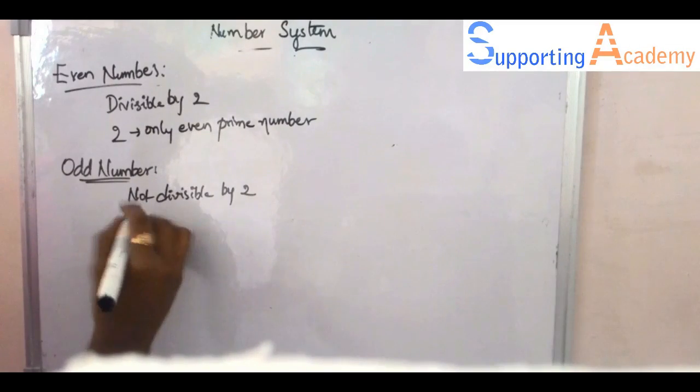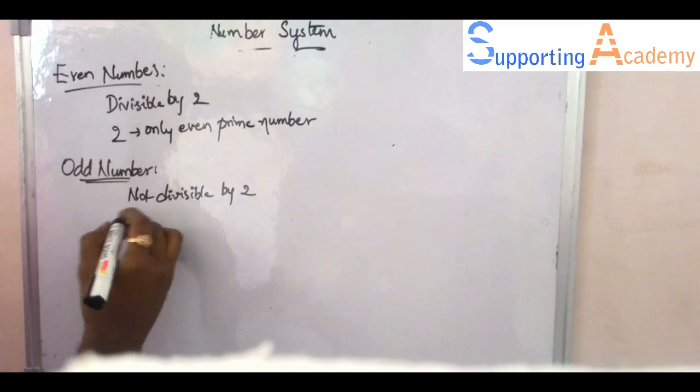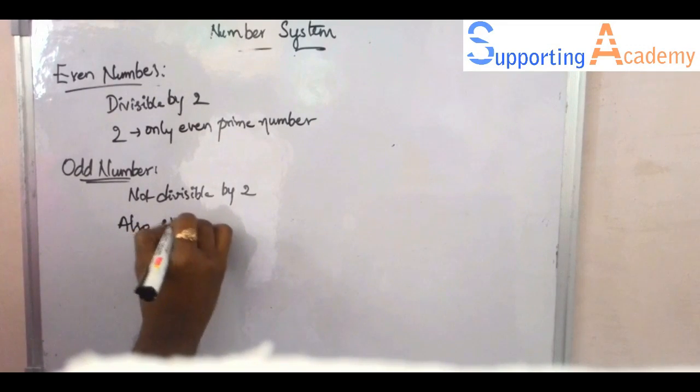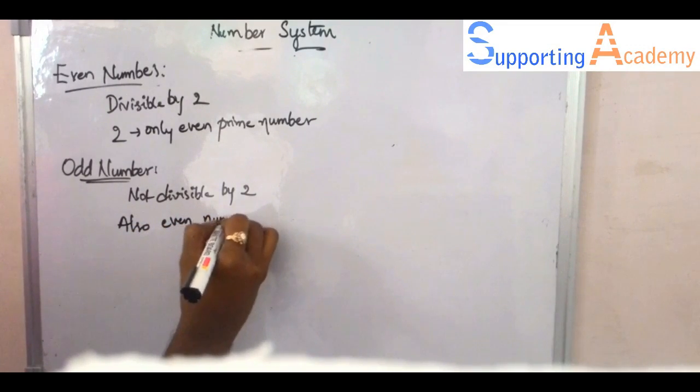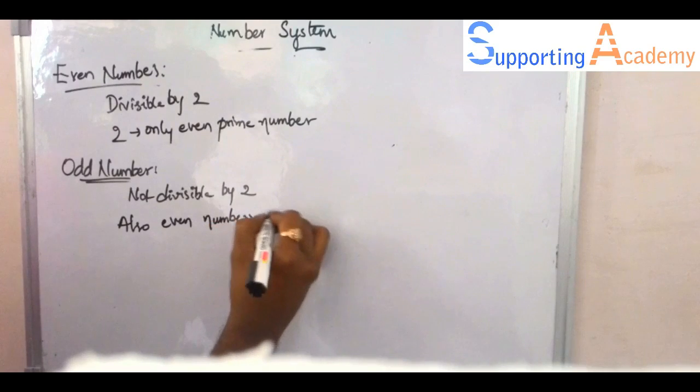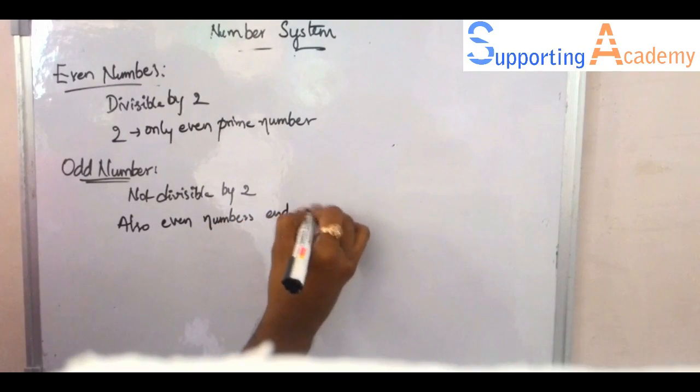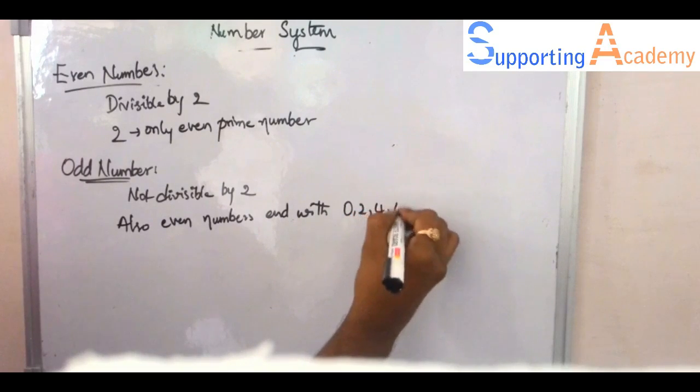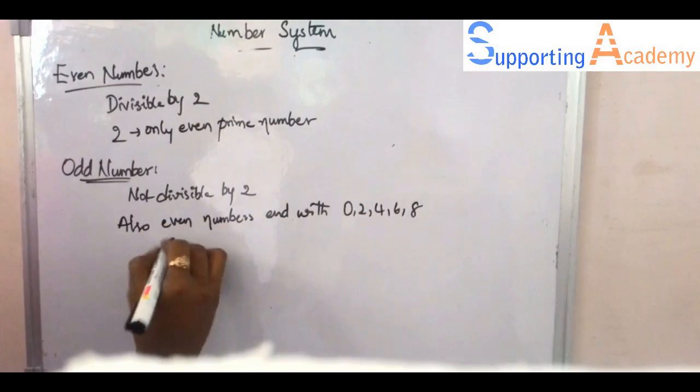And every prime number except 2 are odd numbers. And let me tell about other things. I have told you right, earlier that this is the distinction between the odd numbers and even numbers.